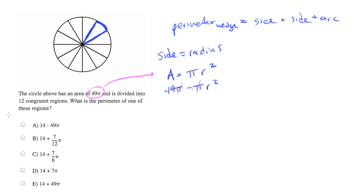Pi cancels out since it's on both sides. Then let's take the square root of what remains, and we'll end up with 7 equals r.